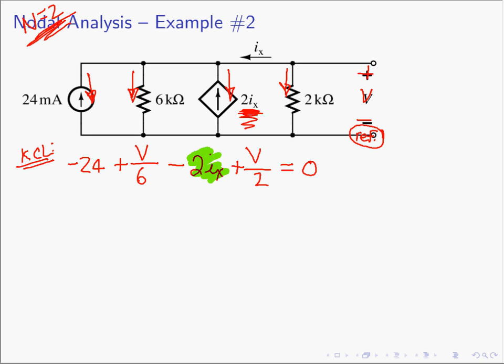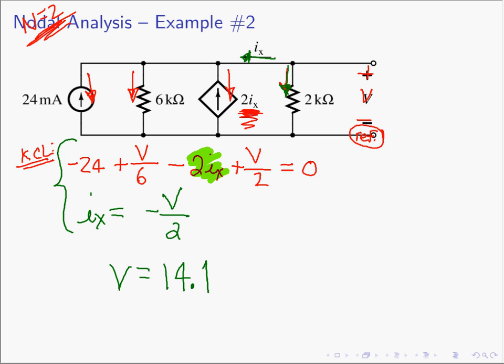We need another equation. Looking at the diagram, Ix is the current flowing opposite to the current in the 2k-ohm resistor, so Ix equals negative V over 2. Now we have two equations and two unknowns. Nodal analysis gave us one equation, and the controlled current source relationship gave us the second. Solving, we find V equals 14.4 volts. With that voltage, we can find any current or power in the circuit.